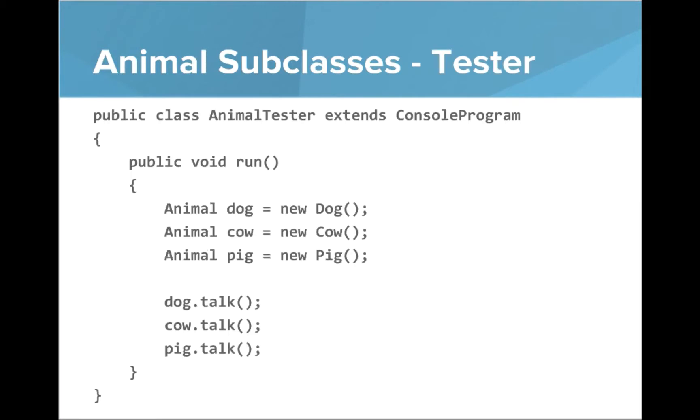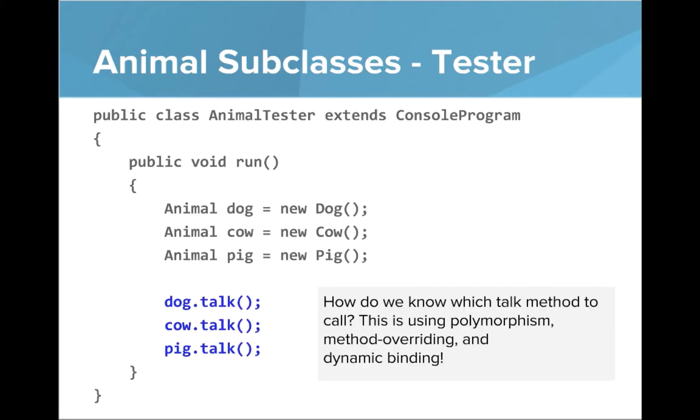And here's a tester. You can see in our run method, we make a new dog, cow, and pig. And then we call talk on each of those objects. And so here in the blue, this is the question. This is the area where we're really diving into polymorphism. How do we know which talk method to call? This is using polymorphism, method overriding, and dynamic binding. With polymorphism, it means that actually the right method is going to be called because these subclasses can act a little bit differently with their own talk method. And specifically, it's because the talk method is being overridden.